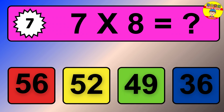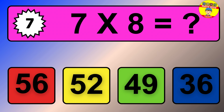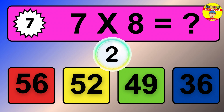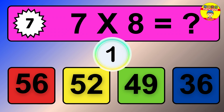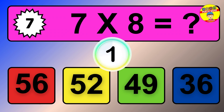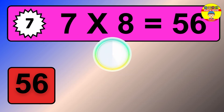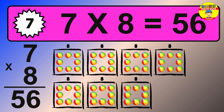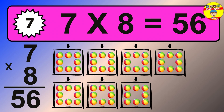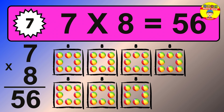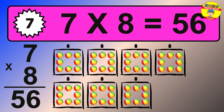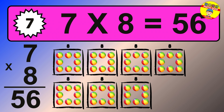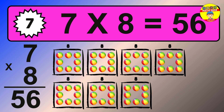Question 7. 7 times 8 equals what? The answer is 7 times 8 is 56. To calculate, we have 7 groups with 8 balls each one. So how many balls do we have? 56 balls.